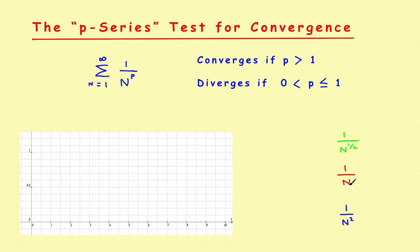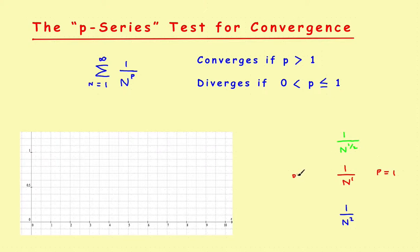Let's start with 1 over n. You might recognize this as the harmonic series. If this were a sequence that made up a series, does the series converge or diverge? Now, 1 over n is like having 1 over n to the first power, so in this case p is equal to 1. Since p equals 1, which falls in the less-than-or-equal-to-1 case, this series is going to diverge. The harmonic series diverges because p is equal to 1.